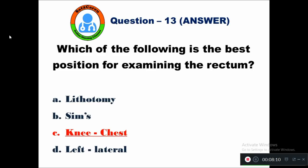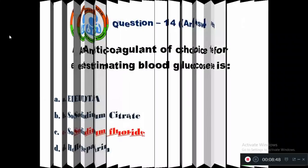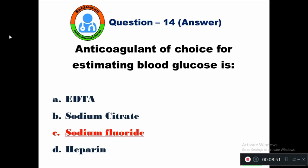It will be motivating you to get more marks in the next videos. Question 14: Anticoagulant of choice for estimating blood glucose is — option A EDTA, B sodium citrate, C sodium fluoride, D heparin. Sodium fluoride is commonly used as an anticoagulant for estimating blood glucose.